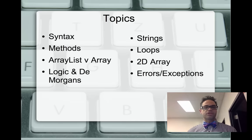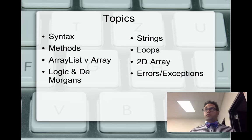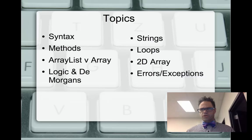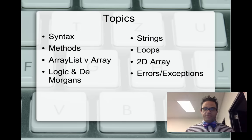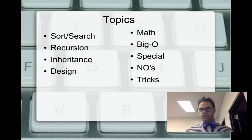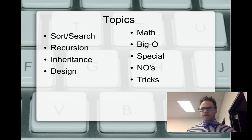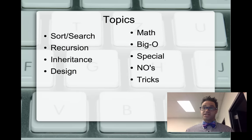We've got a bunch of topics we're going to be reviewing today. The first set includes syntax of Java, methods, ArrayLists versus arrays, logic, strings, loops, 2D arrays, errors and exceptions. We also have insider topics: sorting and searching, recursion, inheritance and design, math, and the idea of efficiency. I know Big O notation is not on the AP exam anymore, but it's on my state test, so I have to cover it.